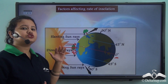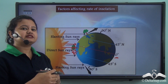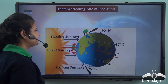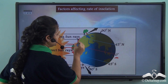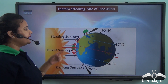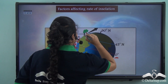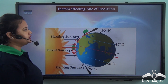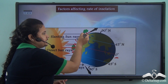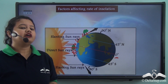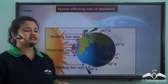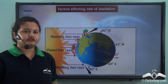As we proceed towards the poles, the angle of incidence — that is, the angle at which the sun rays strike the earth's surface — decreases. If we draw a perpendicular line at a higher latitude, the sun rays make a smaller angle. So as we move towards the poles, the angle at which the sun rays strike the earth's surface decreases.